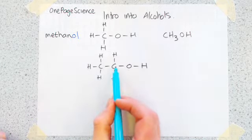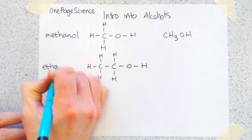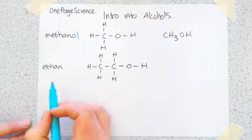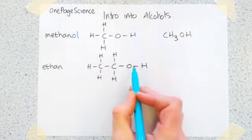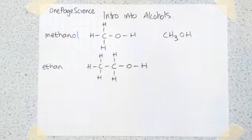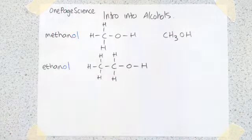This one then, because it has two carbons, we name this one eth, which means two carbons. And then if it was two carbons without this bit, it would be ethane, but because it's got the OH part on it, then it becomes ethanol.